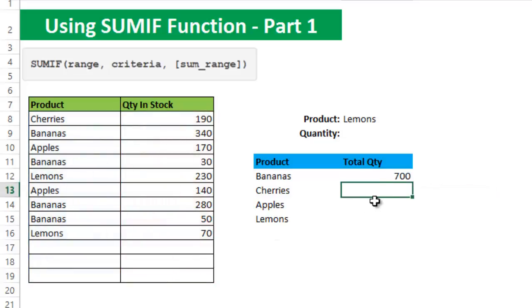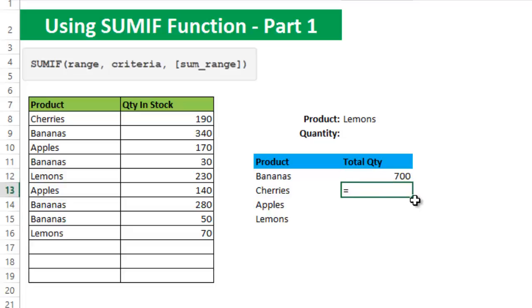Close the parenthesis and press Enter to get the result. You get the result 700. After that, you can do this for cherries, apples, and lemons.